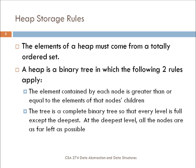With a heap, the elements in the tree have basically two rules. An element contained by each node is greater than or equal to the elements of that node's children. And then, the other criteria for having a heap is that the tree is a complete binary tree, so that every level is full except the deepest, and at the deepest level, all the nodes are as far left as possible. So, if you have a complete binary tree and you maintain this property that the parent node is greater than the children nodes, then you basically have a heap.